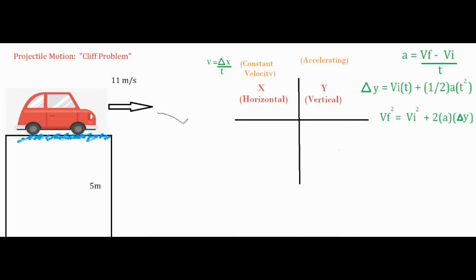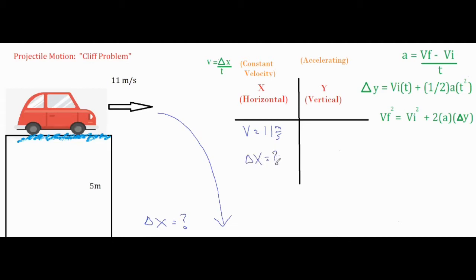As this car goes into free fall, if they gave you the height at which it left the edge and the initial velocity, then most likely you're going to be solving for delta x — how far did it land from the edge of the cliff? So first, we have our initial velocity of 11 meters per second. We know we want delta x eventually, so I'll put delta x with a question mark to remind myself that's the value I'm looking for at the very end.